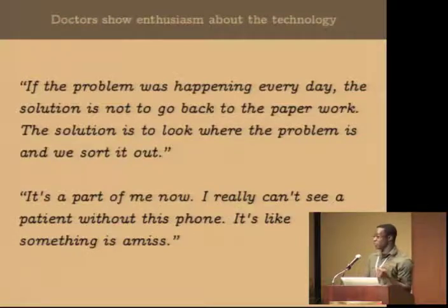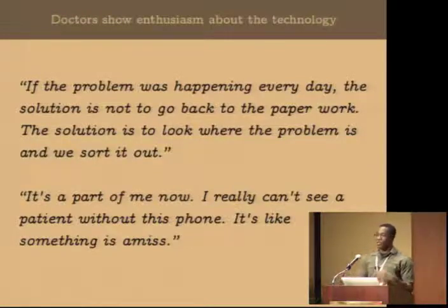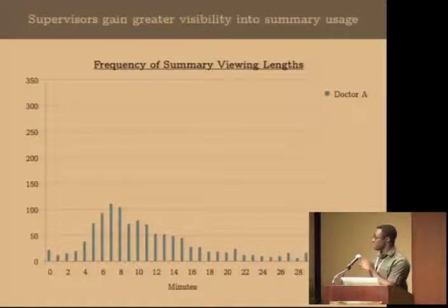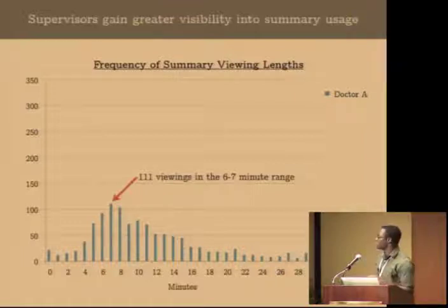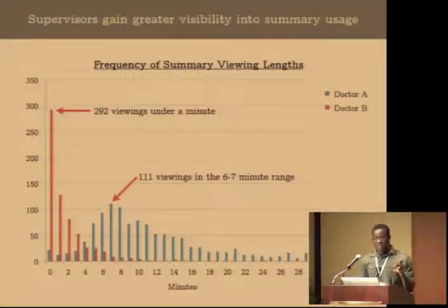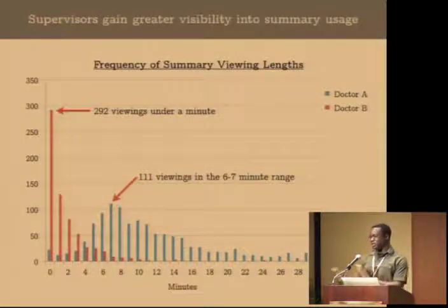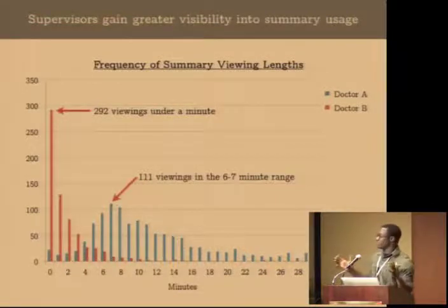Probably the biggest contribution of this work is for supervisors, who get much greater visibility into how the system is being used and how to tweak it. For example, summary viewing patterns vary widely by doctor. Doctor A shows 111 viewings in the six-to-seven-minute range — expected for a thorough review. Doctor B shows 292 viewings under a minute. This doesn't necessarily mean Doctor B isn't reviewing properly — they might open and close the summary at the end of the visit to check through things. But this ability to monitor exactly what's happening and then dig deeper with doctors is a really big contribution the system makes.